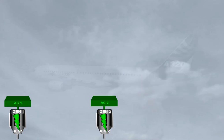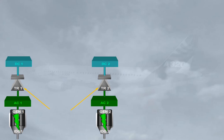Each AC bus supplies its own transformer rectifier, TR. AC bus 1 to TR1, AC bus 2 to TR2. The TRs convert alternating current, AC, into direct current, DC, to supply their related DC buses, DC 1 and DC 2.